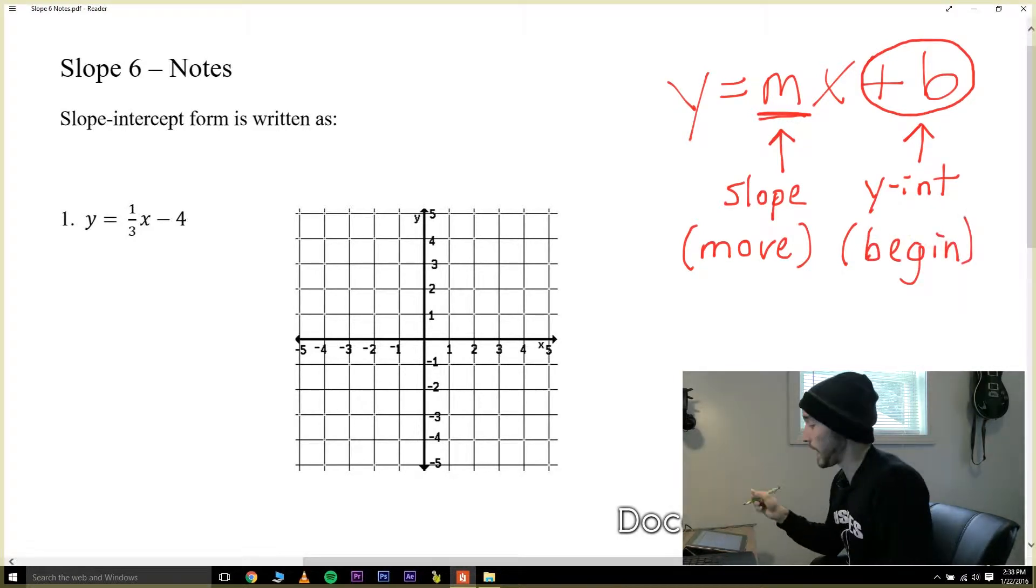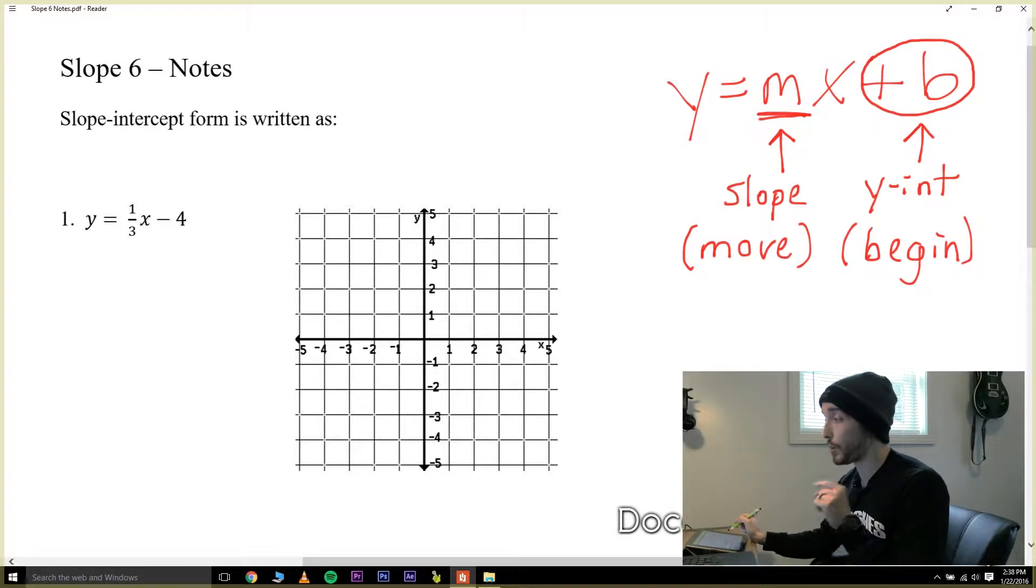So if we go to graph a line and it's written in slope intercept form, the number at the end tells us where to put our first dot, where to begin. Since you need two points to make a line, we can follow the slope to find another point on that line. Let's see if this makes sense by looking at example number one. Is this written in slope intercept form? Yes, because it's y equals a number times x and then plus or minus another number.